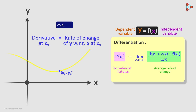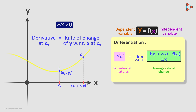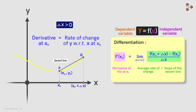If delta x is greater than zero, then x0 plus delta x will be somewhere here on the x axis. Then this ratio is the slope of the secant line between these two points. Now as we find the average rate in the interval closer and closer to x0, we see that these secant lines approach the tangent line at x0.